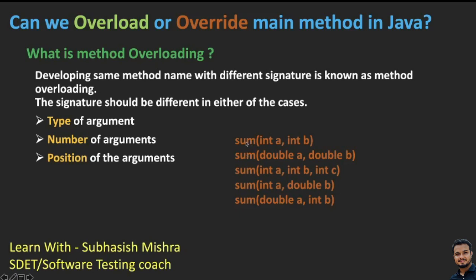So coming back to the definition: defining the same method name with a different signature is method overloading. We have the same method name 'sum' but different signatures. The signature is different in terms of type of arguments — here the type was integer, here it is double; number of arguments — here there are two, here there are three; and position of arguments — here integer comes first then double, but here double comes first then integer. This is how method overloading works.